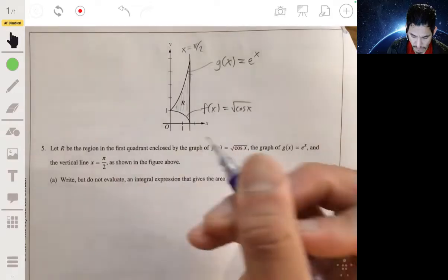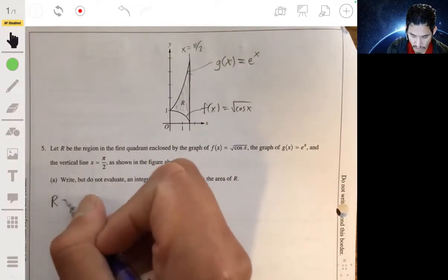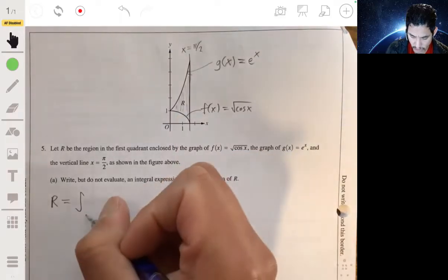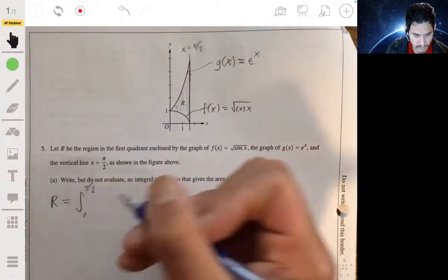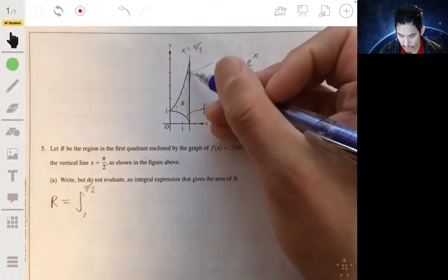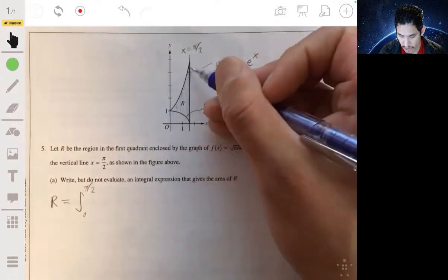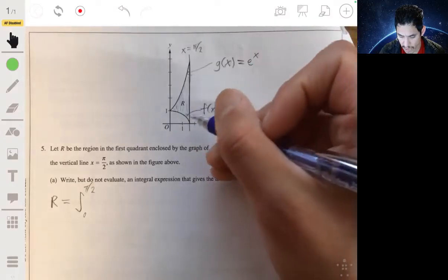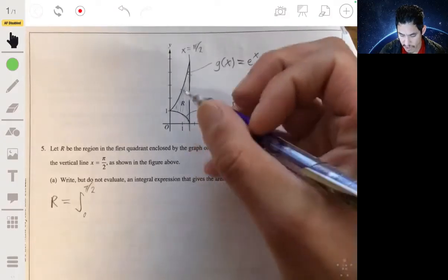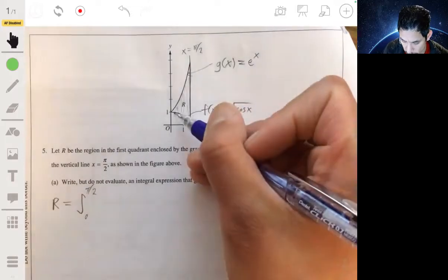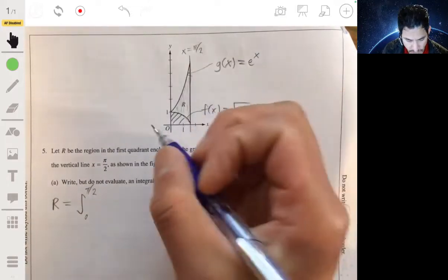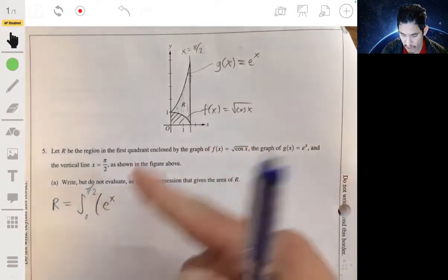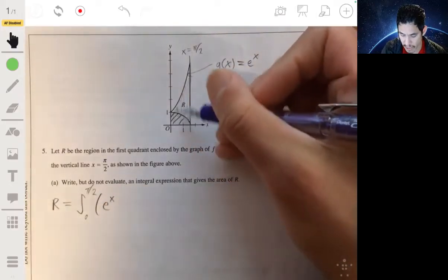So this will be equal to the integral from 0 to π/2. And here we have the top function g(x) minus—we got to take away this, because if we just simply integrated g(x), which is equal to e^x, we would get the entire thing, we would get this as well.